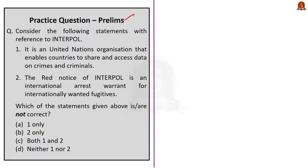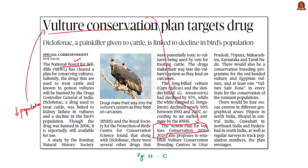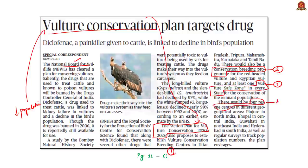Let us move on to the next news article about the Action Plan for Vulture Conservation 2020-2025, which has been cleared by the National Board of Wildlife. The bird's population declined drastically in the past two decades, so vulture conservation is of importance. This action plan proposes to establish vulture conservation breeding centers across five different states: Uttar Pradesh, Tripura, Maharashtra, Karnataka, and Tamil Nadu. There would also be a conservation breeding program, a vulture safe zone in every state, and rescue centers for vultures across India based on regions.